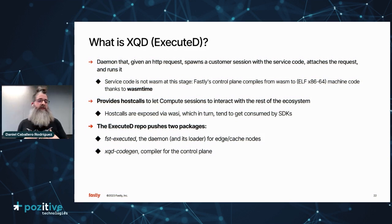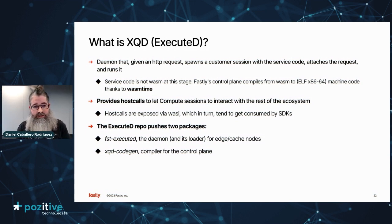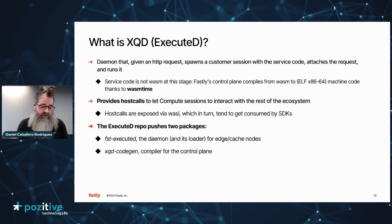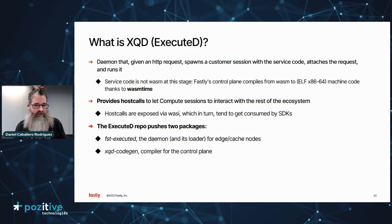In order to describe how we deploy software, I also need to introduce some components enabling the compute platform. I'm working on the Execute team. Execute team maintains executeed — and what is executeed? Executeed is one core daemon we have in our platform: it runs the compute applications. That daemon runs on all our edge servers, and every time there's an incoming request, we create a session like a container with your code. We create that sandbox and implement host calls, letting your application interact with other Fastly services.